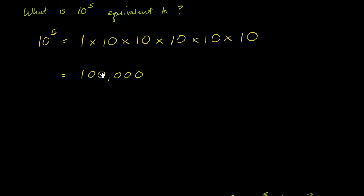You might have noticed: every time we multiply by 10, we're adding another zero to the product. So if we're multiplying by 10 five times, we're going to add five zeros to the product. This is literally going to be one followed by five zeros. So 10 to the fifth is the same thing as 100,000.